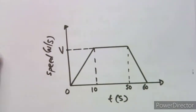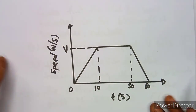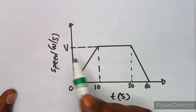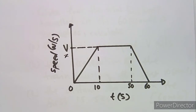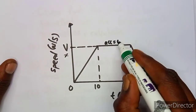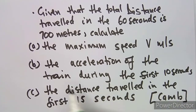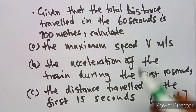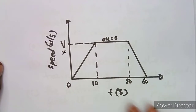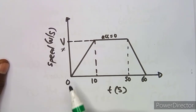We have our velocity-time graph here. I'm going to work on the questions, not the topic. If you cross-check, we are given an unknown value of velocity — that is the maximum velocity. At the constant section, acceleration equals zero, but this doesn't give us the value of v. We are given that the total distance traveled in 60 seconds is 700 meters, meaning the total distance for the whole journey. Distance is the area under the graph.